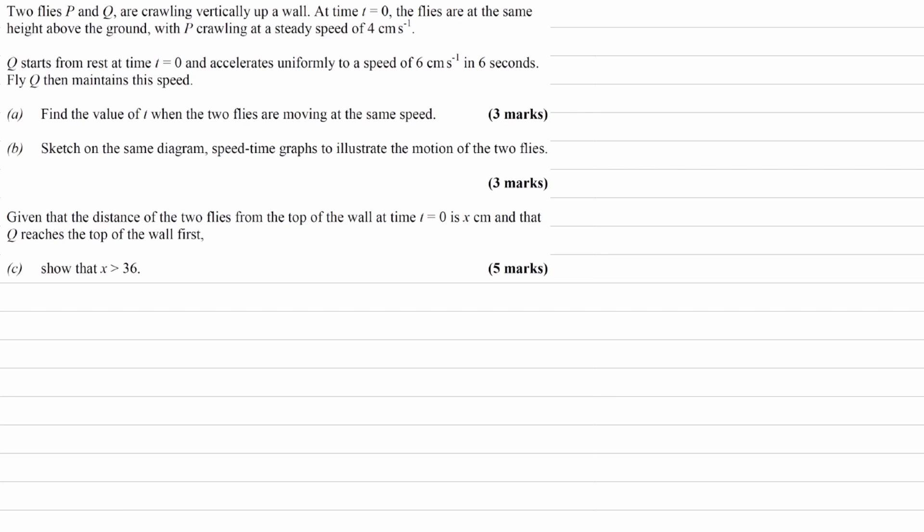So we have two flies, P and Q, are crawling vertically up a wall. At time t equals 0, the flies are at the same height above the ground, with P crawling at a steady speed of 4 cm per second. Q starts from rest at time t equals 0. It accelerates uniformly to a speed of 6 cm per second in 6 seconds. And we're trying to find out for part A the time when the two flies are moving at the same speed.